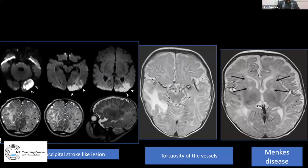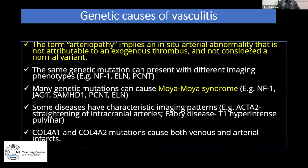A few facts about genetic causes of vasculopathy: the term arteriopathy implies in-situ arterial abnormality not attributable to exogenous trauma and not a normal variant. The same genetic mutation can have different imaging phenotypes — for example NF1. Several genes can cause Moyamoya syndrome including NF1, JAG1, and ELN. Certain genes have characteristic imaging findings: ACTA2 mutation, Fabry disease with T1 hyperintensity of the pulvinar, and COL4A1/COL4A2 mutations causing venous and arterial infarcts.